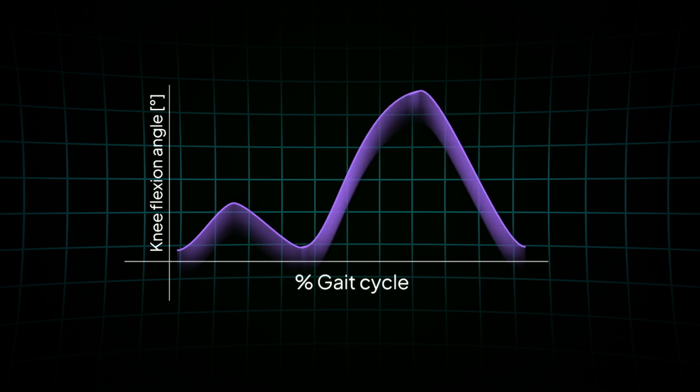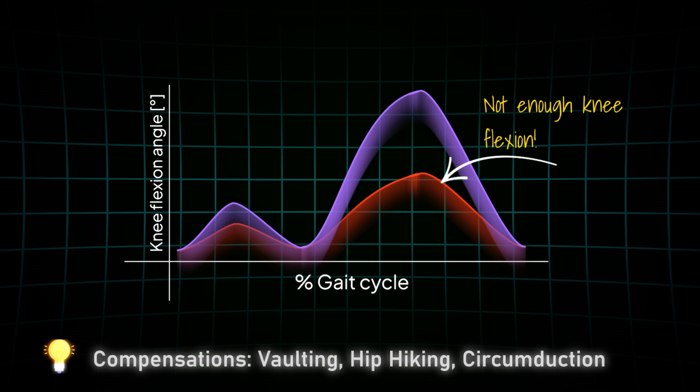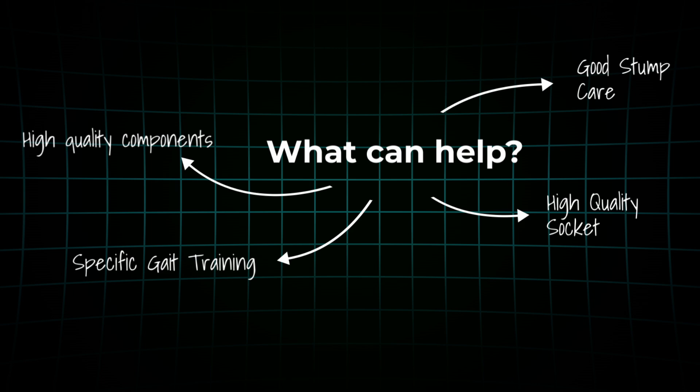During the swing phase, if the prosthetic knee stays too straight, the foot can catch on the ground and creates a tripping hazard. So users adopt compensations like vaulting, hip hiking, and circumduction. These moves keep them safe, but they are less efficient and burn more energy. The fix is a combination of the right prosthetic components and targeted gait training to reduce compensations.